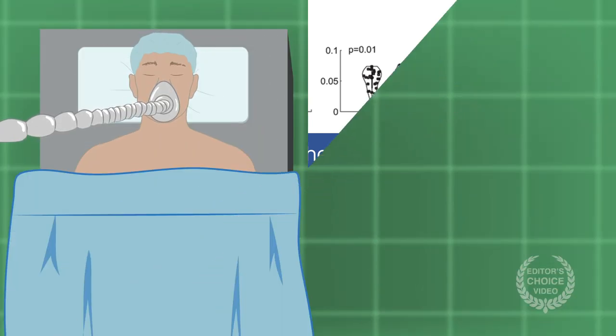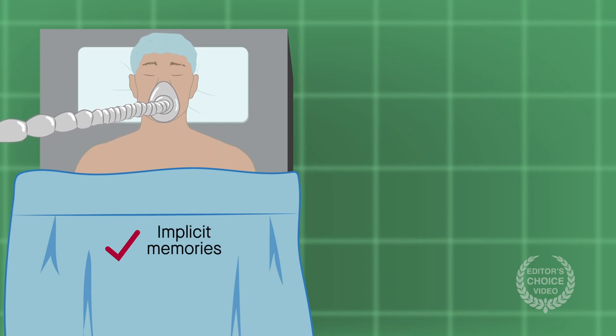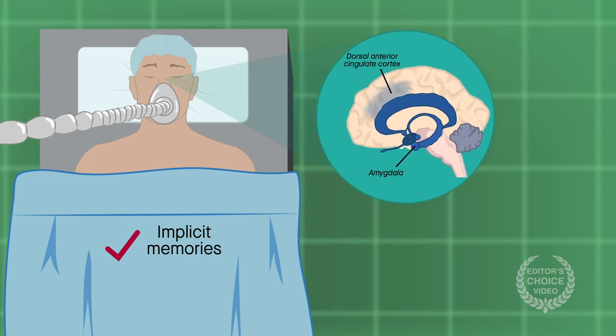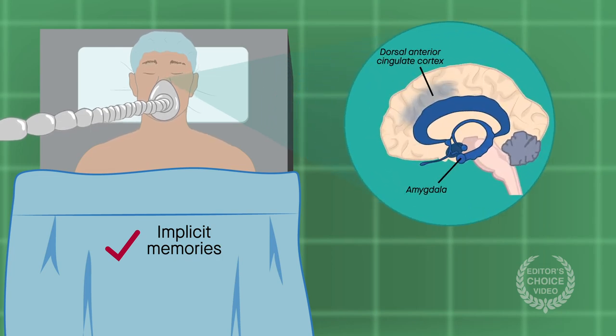The findings support the notion that implicit memories of negative experiences can form during anesthesia. They also indicate that implicit memory formation under anesthesia is similar to what occurs in the awake state, and that it involves the amygdala dorsal anterior cingulate cortex circuit.